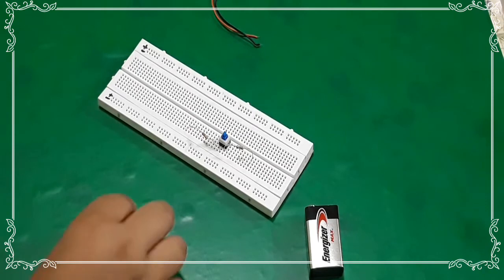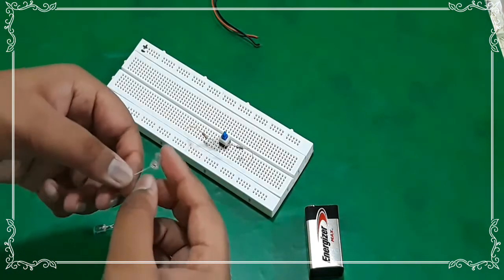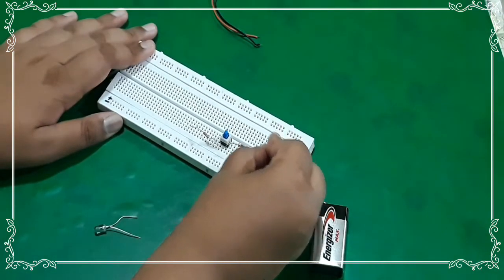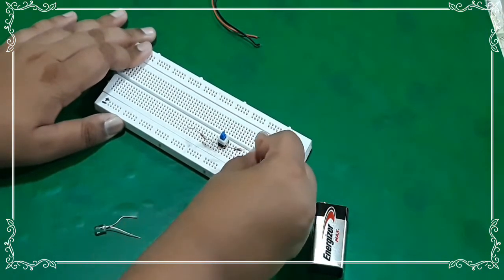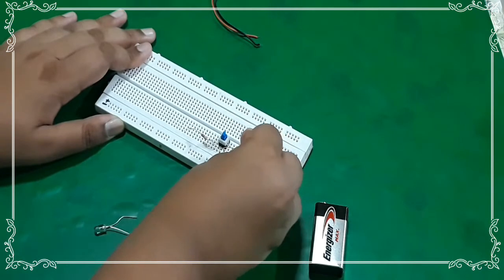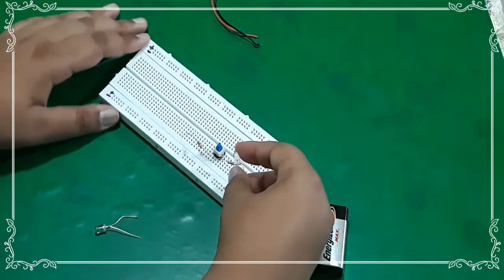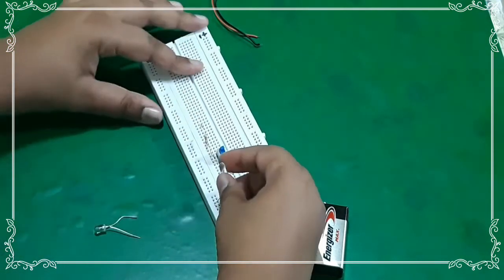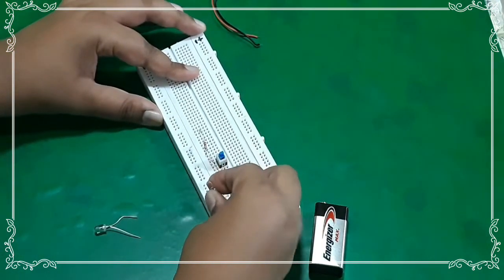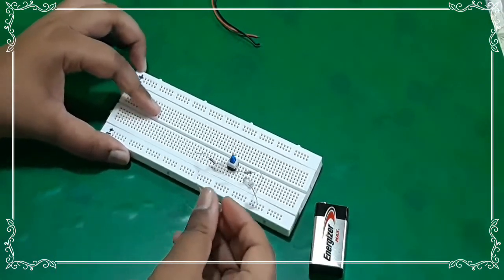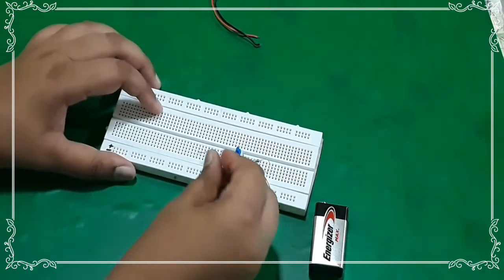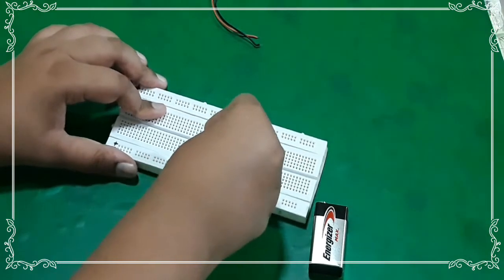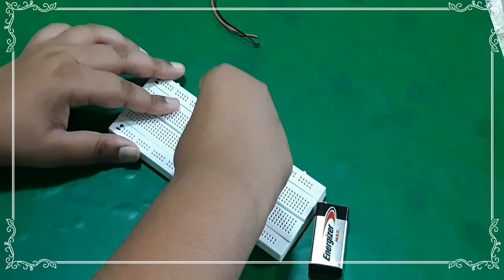Now we have to connect one of the LEDs positive terminal with the resistor, and the negative terminal on the negative part of the power supply. And the same on the next side. The positive terminal with the resistor, and the negative terminal with the power supply.